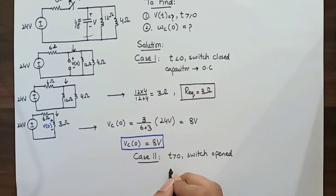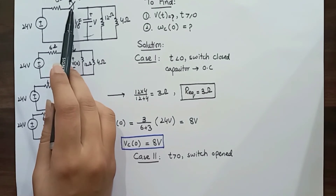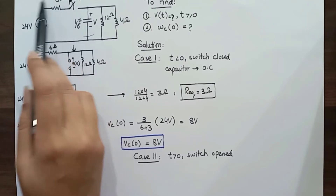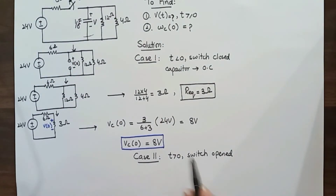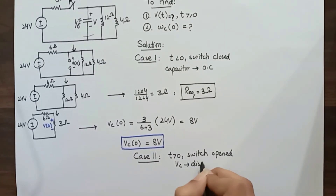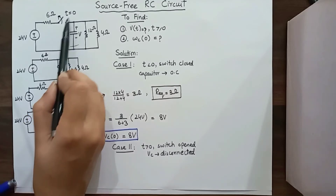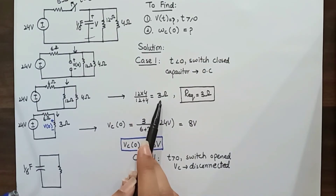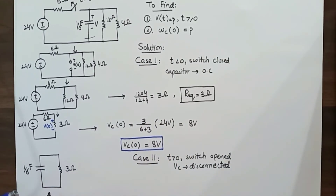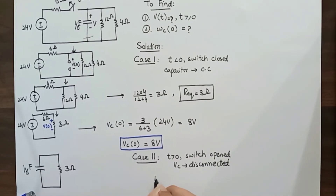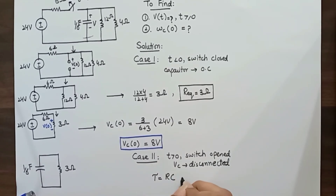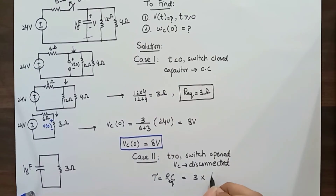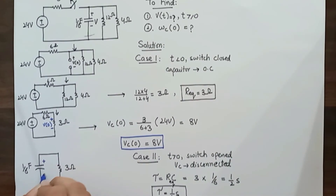For Case 2, when t is greater than zero, the switch opens. The capacitor was initially charged to 8 volts. When the switch opens, the voltage source is disconnected, and only the capacitor and the combination of 12-ohm and 4-ohm resistors (equivalent to 3 ohms) remain. This becomes a source-free RC circuit. The time constant τ = R_eq × C = 3 × (1/6) = 1/2 second.